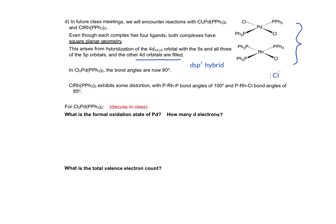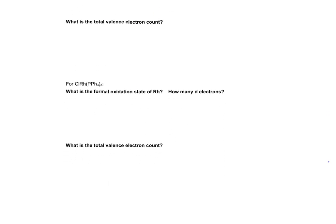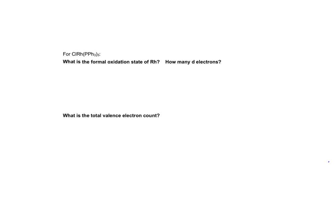In the class meeting for the dichlorobis-triphenylphosphine-palladium complex, we'll discuss the formal oxidation state of palladium, how many d electrons come from palladium, and the total valence electron count. Scrolling down the page, we'll do the same for the rhodium complex. This concludes the video on the introduction to organometallic structure.